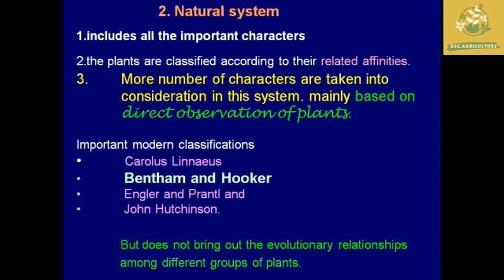In the natural system of classification, all important characteristics are included and classifications are made according to the relative affinities of plants — based on structure, economic growing conditions, and more. A greater number of characteristics are taken into consideration, and direct observation of plants is made. Important contributors to natural system classification include Carolus Linnaeus, Bentham and Hooker, Engler, and John Hutchinson. However, one drawback is that most evolutionary relationships among different groups are not brought out.